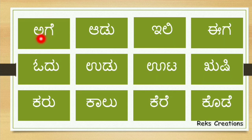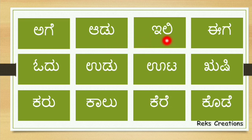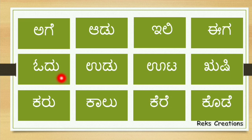A-ge, agay. A-du, a-du. I-li, ili. E-ge, e-ge. O-du, o-du. U-du, u-du. U-ta, u-ta.